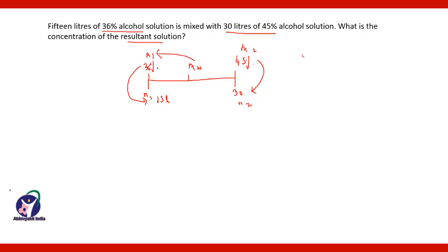N2 corresponds to AW minus A1. What does it mean? If 1/3 equals 2/6, it means 1 corresponds to 2 and 3 corresponds to 6. So here 30 corresponds to AW minus 36. And similarly, 15 corresponds to A2 minus AW, which means 45 minus AW.